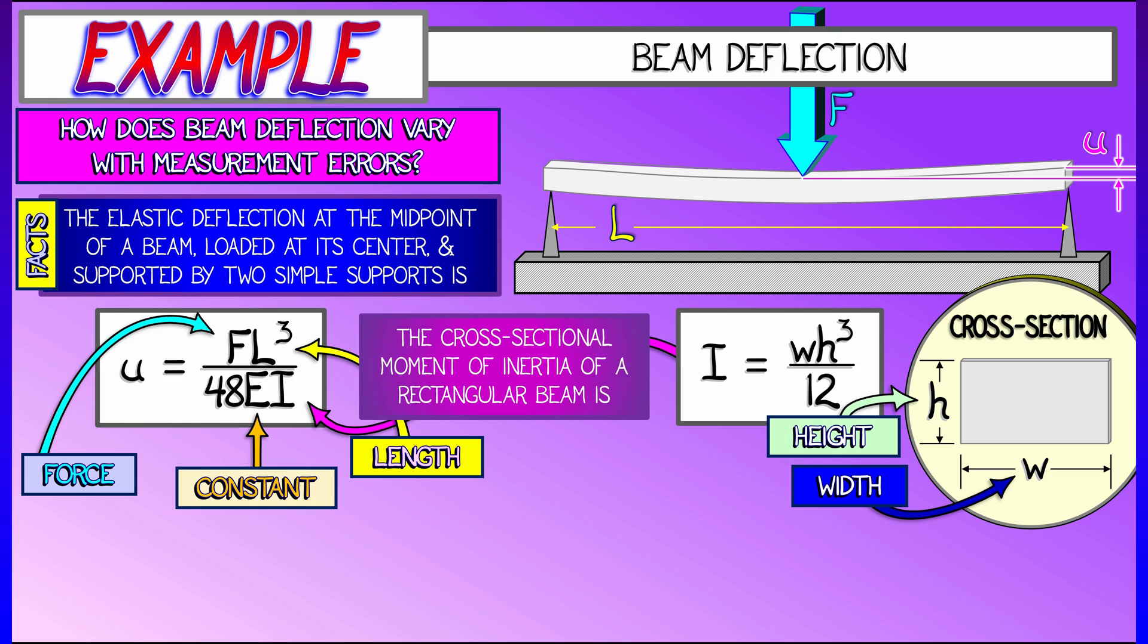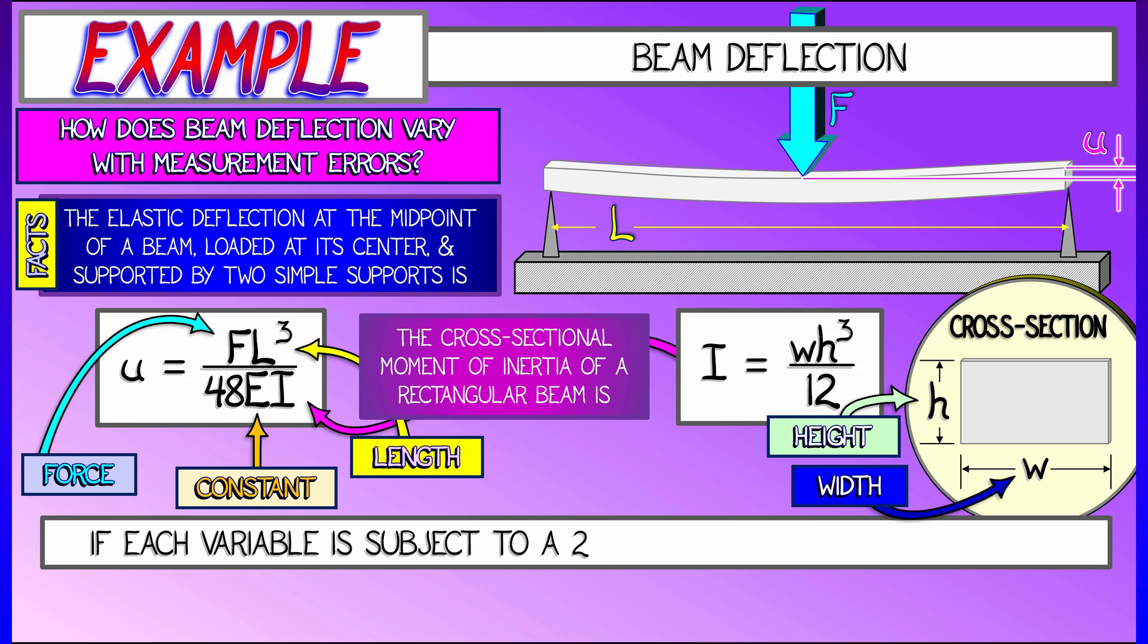Wow, that's a lot of variables going on here. And let's say that I know each of these variables up to a 2% error. What is the net impact, the net percentage error on the beam deflection u? Is it 2%? Is it more than 2%? How much more? How do we figure that out?